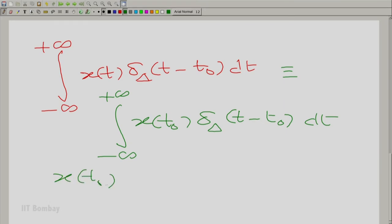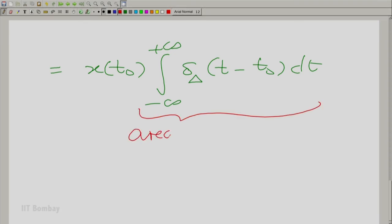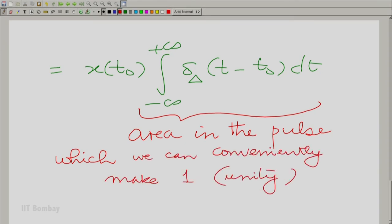But x of t0 is a constant. So it can come out of the integral and therefore, you have that becoming equal to x of t0 times minus to plus infinity delta delta t minus t0 dt and this is essentially the area in the pulse, which we can conveniently make one or unity.